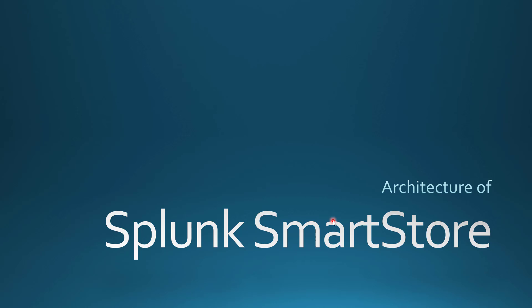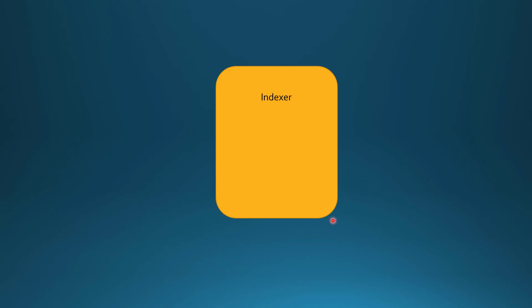In this video we will try to get an idea about Splunk Smart Store. We will understand the basic architecture, and in later videos we'll try to implement it in Google Cloud. So to understand Splunk Smart Store, let's say we have our indexer layer — it could be a single indexer or an indexer cluster. This is where our events come into the indexer, either through the heavy forwarder or other forwarders.